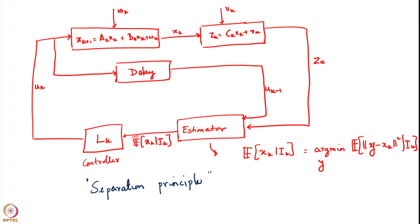This conditional expectation would not need to be computed afresh every time through optimization or other means — it could simply be updated from the previous estimate. Remember though that the previous estimate is of the previous state and uses the previous information, which is what makes translating the estimate from one time step to the next a little bit involved.